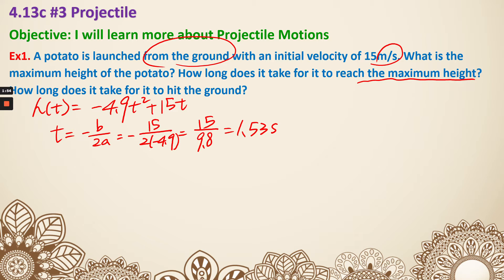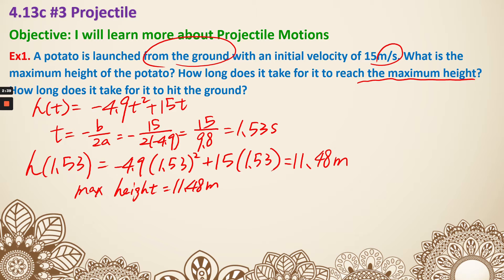Now in order to actually use the time to calculate the maximum height, we are going to plug it in. So, it is 1.53, plug it in, negative 4.9 times 1.53 squared plus 15 times 1.53. That is going to give me 11.48. Don't forget the unit meter. So the maximum height is going to be 11.48 meters, and takes 1.53 seconds to actually reach that maximum height.